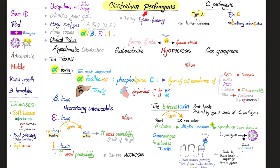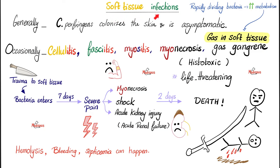What are the diseases caused by Clostridium perfringens? Soft tissue infections, food poisoning, and septicemia. Generally, Clostridium perfringens colonizes the skin but causes no symptoms whatsoever.